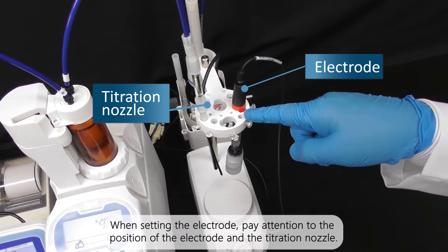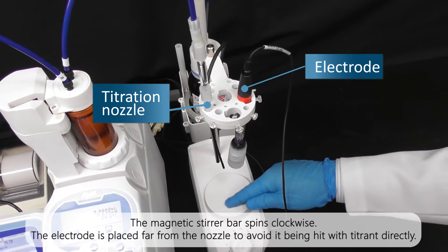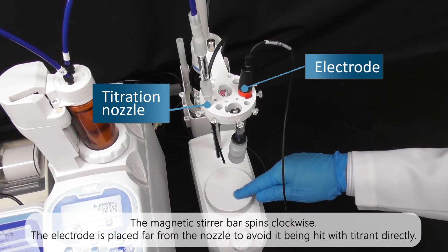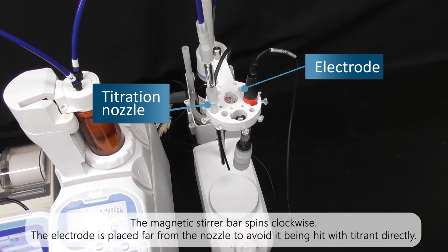When setting the electrode, pay attention to the position of the electrode and the titration nozzle. The magnetic stirrer bar spins clockwise. The electrode is placed far from the nozzle to avoid it being hit with titrant directly.